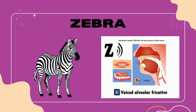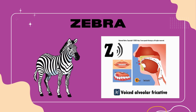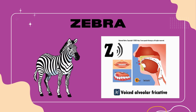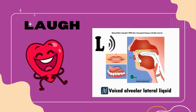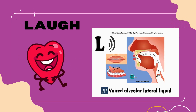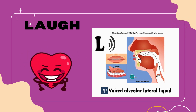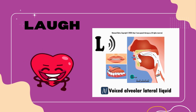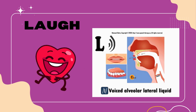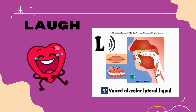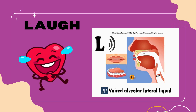Zebra contains the letter Z, representing the voiced alveolar fricative sound Z. As we say zebra, the airflow is partially obstructed at the alveolar ridge, creating a buzzing sound. Laugh starts with the letter L, representing the voiced alveolar lateral approximant sound L. When we say laugh, we allow the airflow to pass along the sides of the tongue, creating a clear L sound.